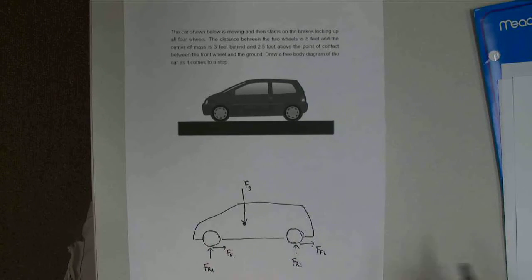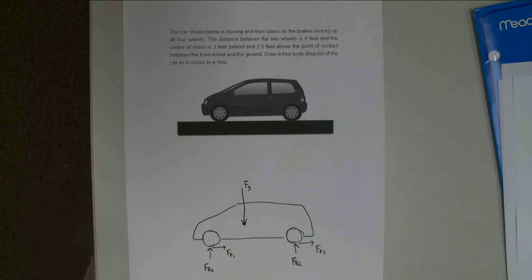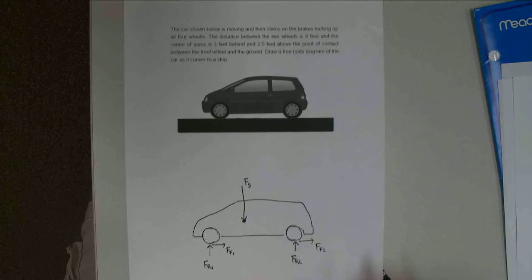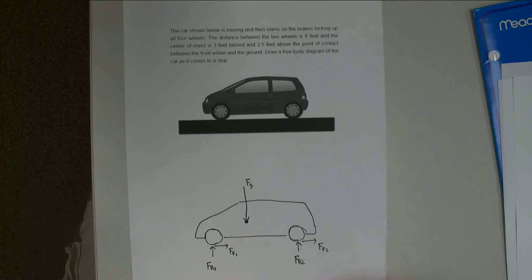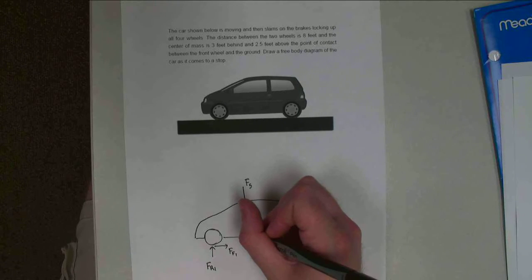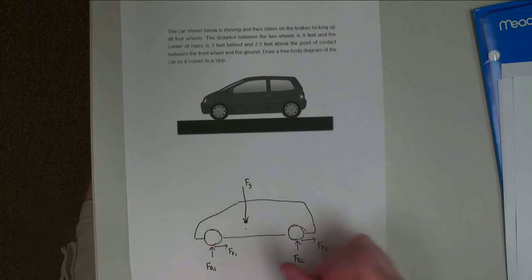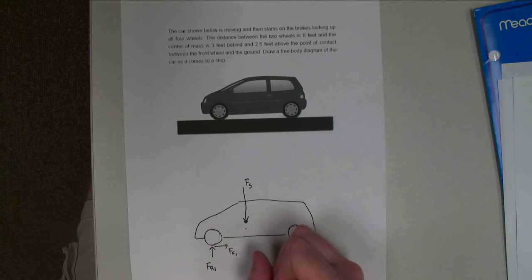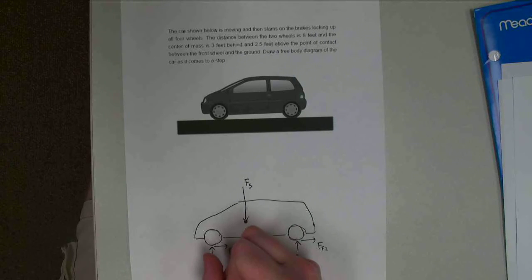And then other forces. I don't really seem to have any other forces, so these are the forces. I also need to be careful at this point. I need to label the dimensions in this as well as the actual forces. So I've got the front wheel. If I measure this whole thing, I know the distance between front and back was eight feet.